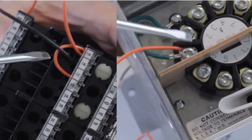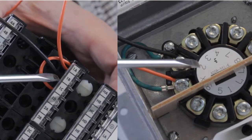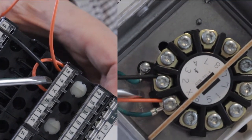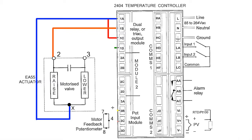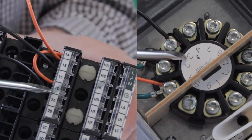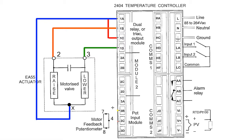Next, wire terminal 1B of the temperature controller to terminal 2 of the motorized valve actuator. Next, wire terminal 1D of the temperature controller to terminal 3 of the motorized valve actuator. This completes the output wiring for this style of control.